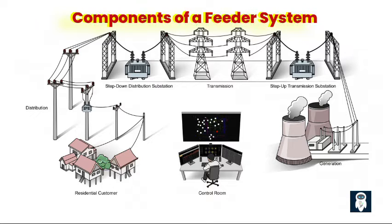Fifth, switching devices such as switches and disconnectors are used in the feeder system to control the flow of electricity, allowing for manual or automated switching of circuits to enable maintenance activities, load balancing, and rerouting of power during outages or system upgrades. Sixth, voltage regulation devices such as voltage regulators and capacitor banks are employed along the feeder system to maintain voltage levels within acceptable limits, compensating for voltage drop due to the resistance and impedance of the feeder lines.